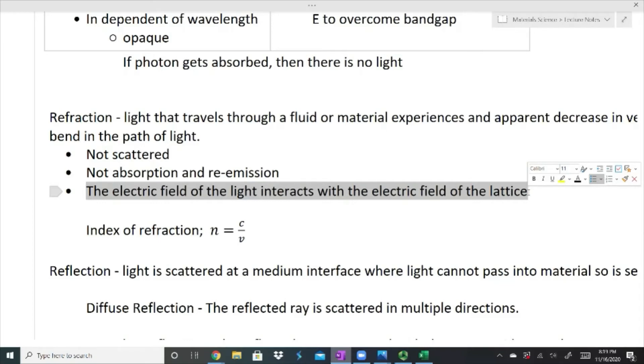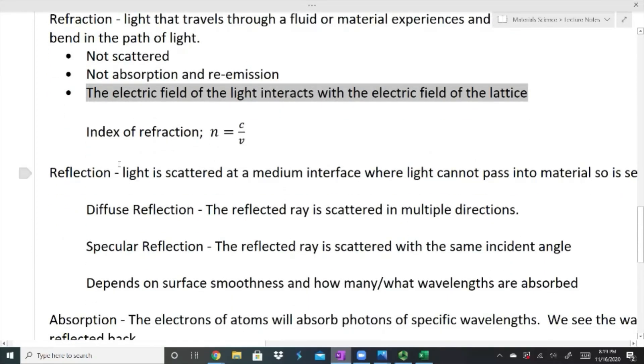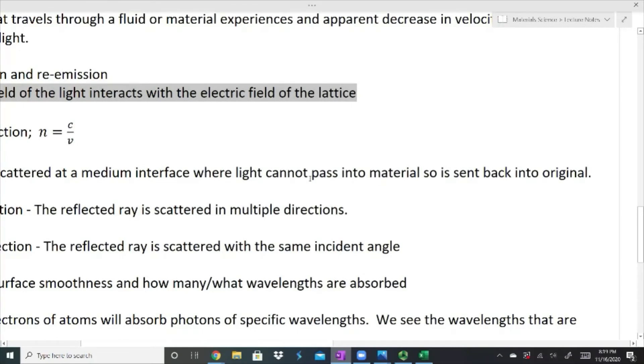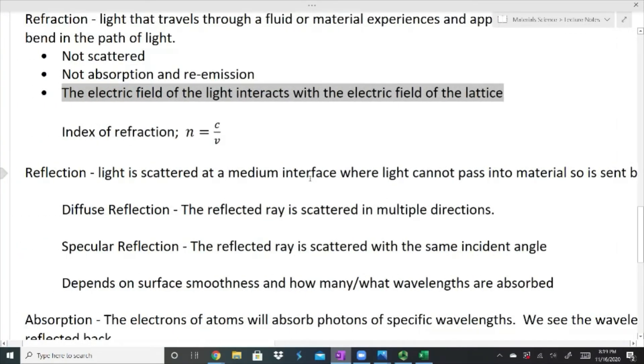There's reflection. Reflection is light that is scattered at a medium interface where light cannot pass into a material, so it's sent back into the original. What happens is a light ray comes in, hits material, it's not allowed to penetrate, and so some of it bounces back. We have a couple different types. We have diffuse reflection. This is where the reflected ray is scattered in multiple directions. You get this picture normally with rough surfaces that do this. It's actually the most common type of reflection. I could have a light ray that comes in, and when it bounces back out it bounces off in multiple directions. That's what we see in nature for the most part.